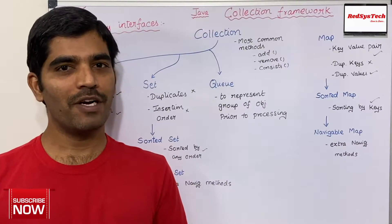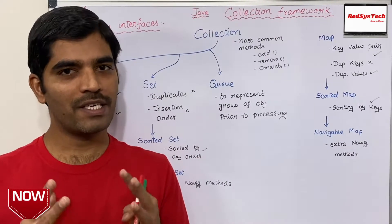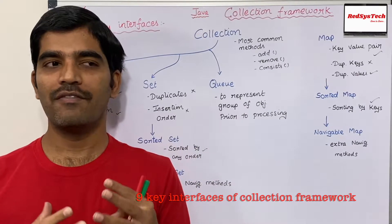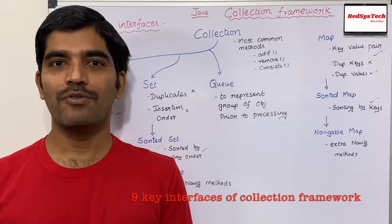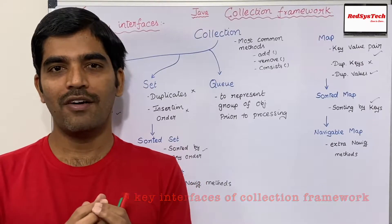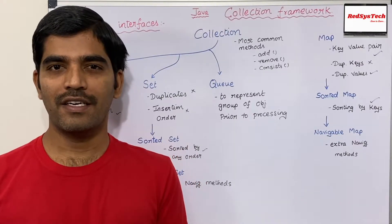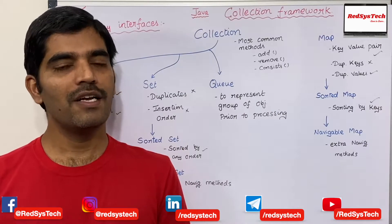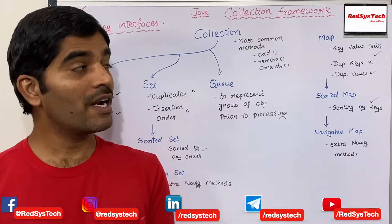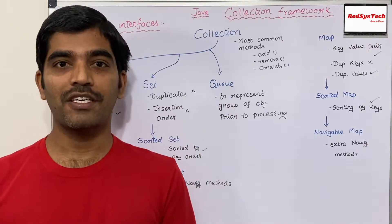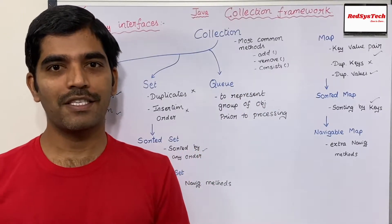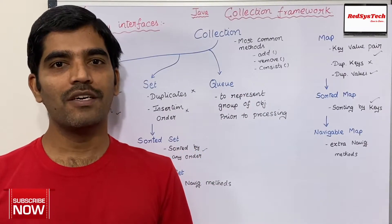In our previous videos, we discussed what is a collection and what is a collection framework. A collection is nothing but a group of objects. When we deal with a real-time program, we are not going to write a program to deal with only one object. We have to deal with multiple objects — like a student database, people records, or customer data — and represent them as a single entity. That is called a collection.